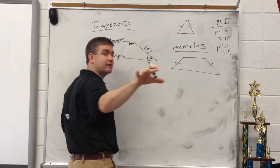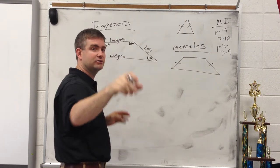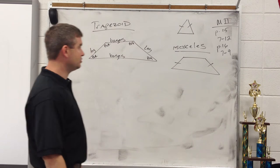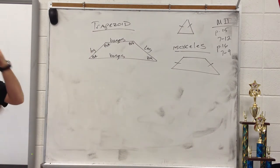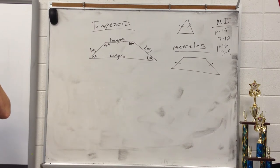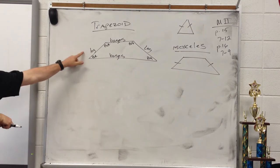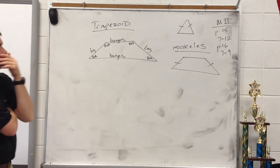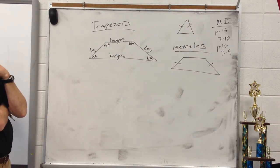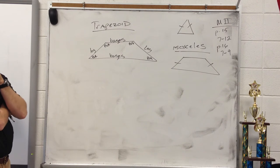The non-parallel sides of a trapezoid are the legs of the trapezoid. If the legs of a trapezoid are congruent, then the trapezoid is an isosceles trapezoid.